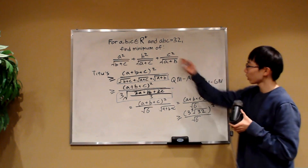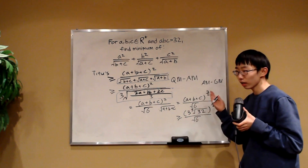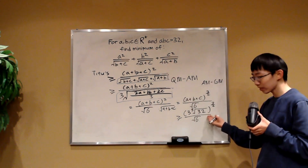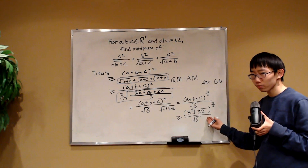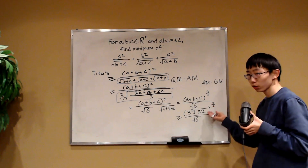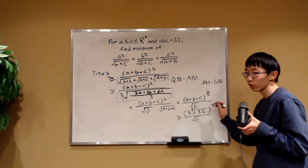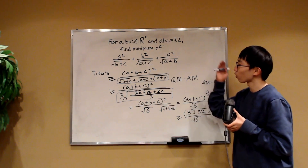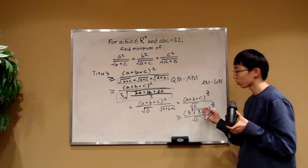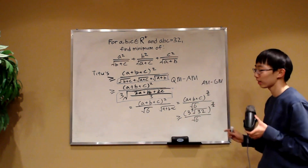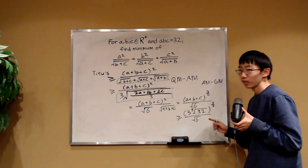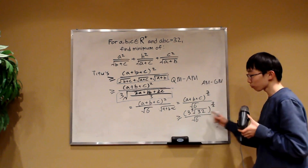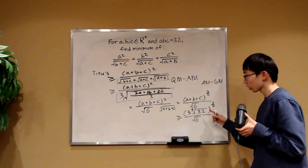We have now deduced that this expression is greater or equal to the bound via Titus' Lemma, then by QM-AM, and finally by AM-GM. Whatever this is greater or equal to is a candidate for the minimum value. However, we also have to prove that it's actually possible to achieve this value — it's not enough to just show the expression is always greater or equal. So let's first simplify this expression since it's quite large.